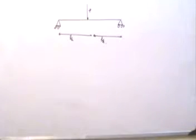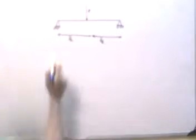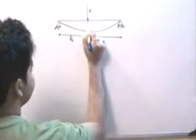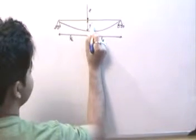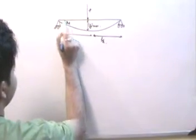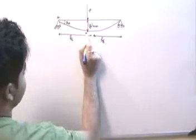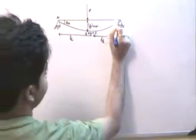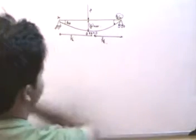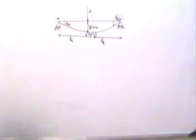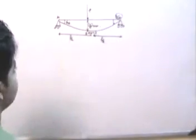If we draw the elastic line or the deflected curve, it will have the maximum deflection at the center. At this point, say theta_a — if this point is A — and this point is B where theta_b equals zero, and here it is theta_c. What we are going to find out is the slope theta_a and the deflection y_max.